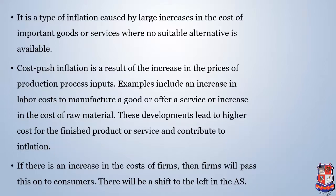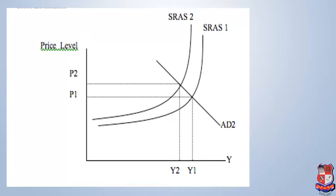If there is an increase in the cost of firms, firms will pass this on to consumers. There will be a shift to the left in aggregate supply. In this graph, the y-axis is the price level and the x-axis is aggregate output. We can see the aggregate supply and aggregate demand curves. In cost-push inflation, the initial price is P1 and output is Y1. As aggregate supply decreases, the price level increases and output decreases, whereas aggregate demand also decreases.